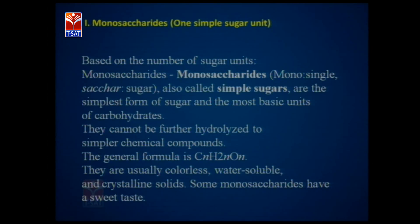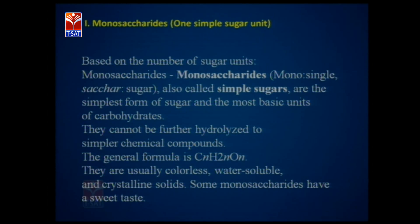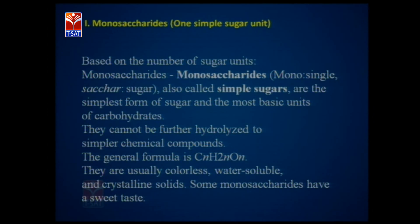Coming to the first group — monosaccharides — based on the number of sugar units: 'mono' means single, 'saccharide' means sugar. They are also called simple sugars, the simplest form of sugar units, and the most basic units of all carbohydrates. They cannot be further hydrolyzed to simpler chemical compounds. The general formula is CnH2nOn. They are usually colorless, water-soluble, crystalline solids. Monosaccharides have a sweet taste, that is why we call them sugars.